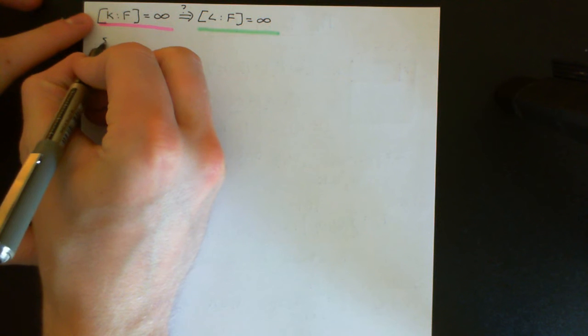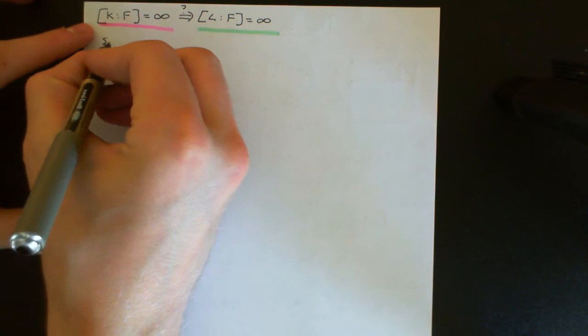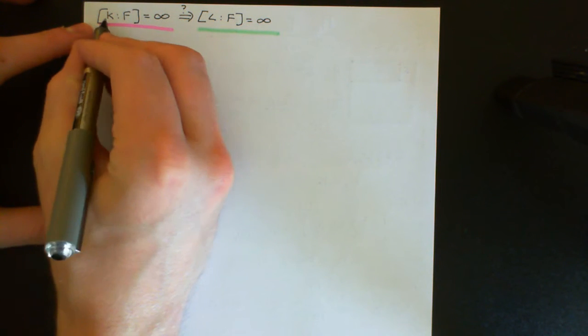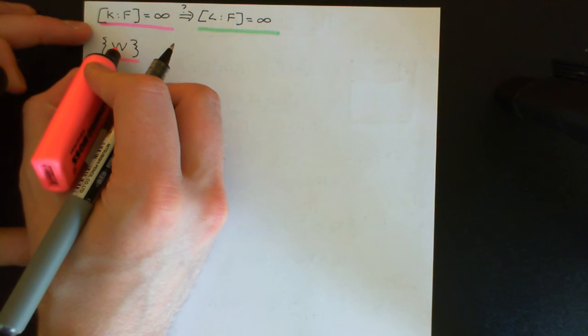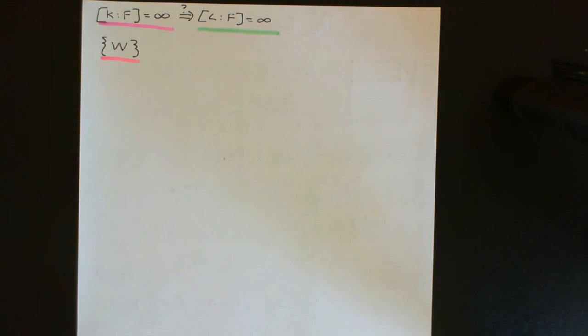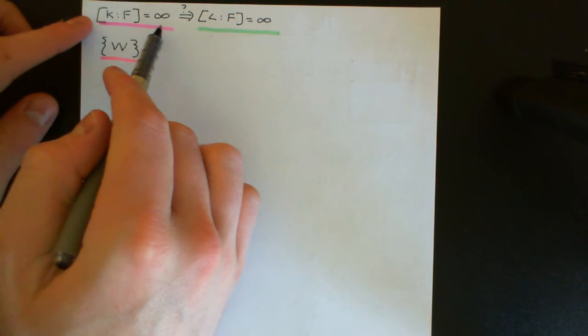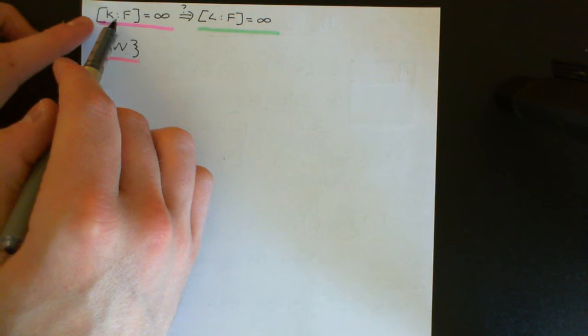From basic linear algebra, if you have a set containing a single non-zero vector, that set is linearly independent. Let's say I take some arbitrary vector W, which is an element of K and not the zero vector. Then the set containing just W is linearly independent — the only linear combination with coefficients from F that gives zero is the trivial one. However, because the degree is infinite, this set does not span the entire field K.